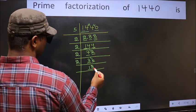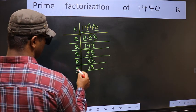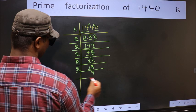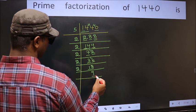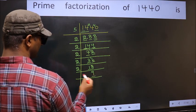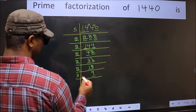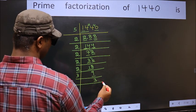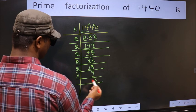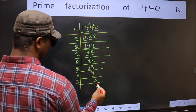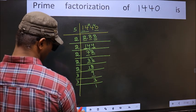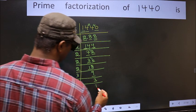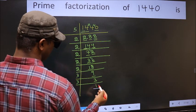Now we have 18. 18 is 2×9=18. Now we have 9. 9 is 3×3=9. Now we have 3. 3 is a prime number, so 3×1=3. So we got 1 here.